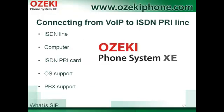If you would like to connect your VoIP network to an ISDN PRI line, you need the following components: an ISDN line, a computer, an ISDN card that is supported by your operating system, and a VoIP PBX.